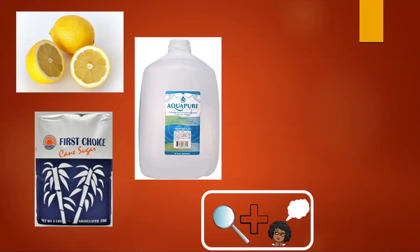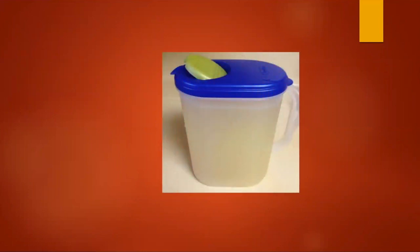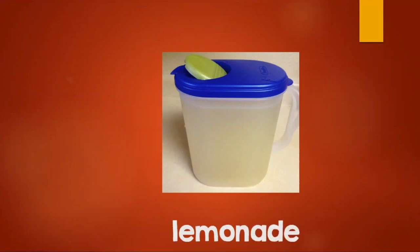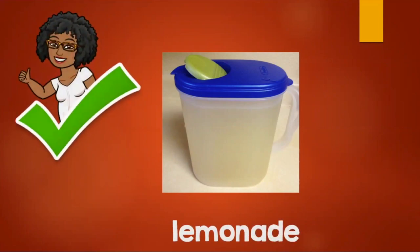Did you make a guess? If you said we're going to make a big jug of lemonade, you are absolutely correct! You used the clues of the lemon, the water, and the sugar. And you thought to yourself, well, I know that my mom uses lemons, water, and sugar to make lemonade. And you made a guess and your guess was correct. Awesome thinking!